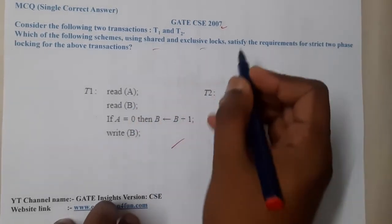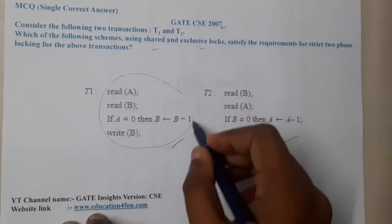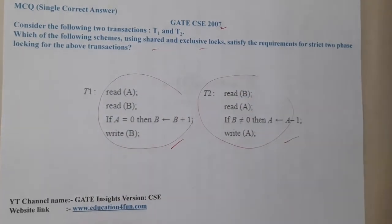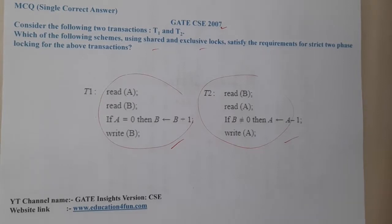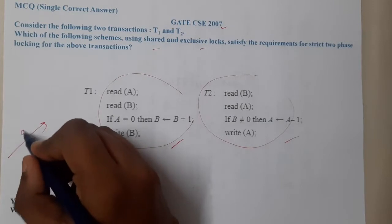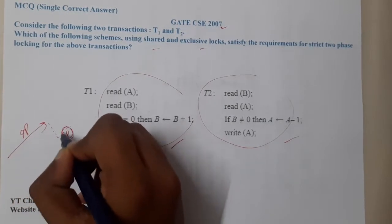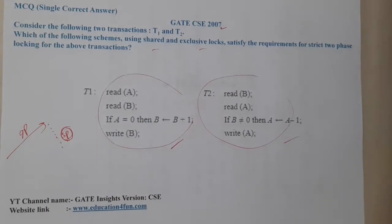...shared and exclusive locks satisfy the requirements for strict two-phase locking of the above scheduler? So basically, this is T1 and T2. They are trying for strict locking. What is the concept of strict? We will have growing phase and only partial shrinking phase. If you are unlocking, you should unlock only shared variables.